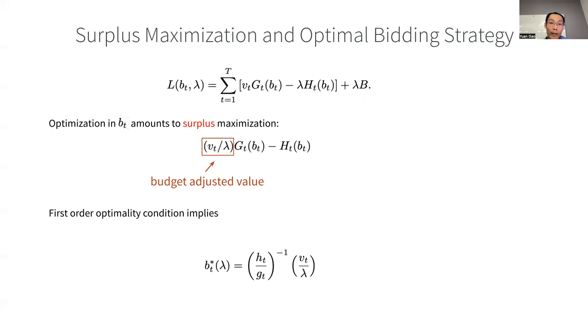So up to this point, the framework has been pretty general. There is no assumption on the selling mechanism imposed by the platform. It incorporates a lot of the well-known optimal bidding formulas. For example, suppose the t's impression opportunities sold were a second-price auction, we can then spell out the gt and ht in that case.